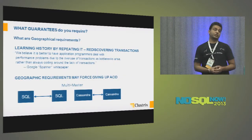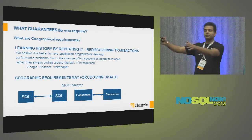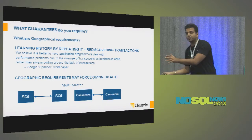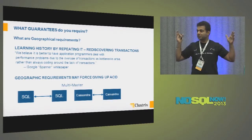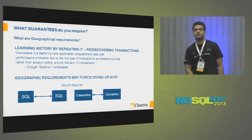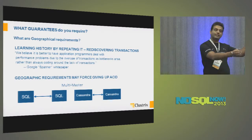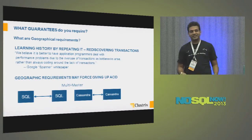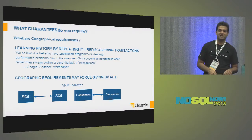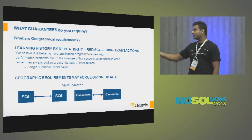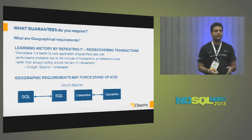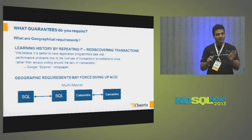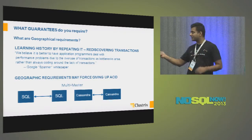Then there's the question of what guarantees do you need. We were in a space where we said use transactions for everything — you didn't need them for everything. Then we moved to NoSQL for everything, and then you realize transactions are kind of good for some stuff. So use what you need. If you need transactions, use transactions. If you don't need them, don't — but don't use NoSQL where you need transactions. Then there are geographic requirements: if you are setting up a multi-master, you might need to give up ACID properties, and if anybody tells you otherwise, it's not right. So then you can decide what's the right solution.